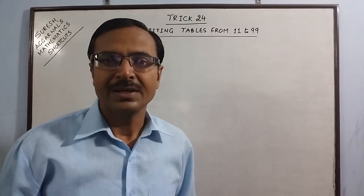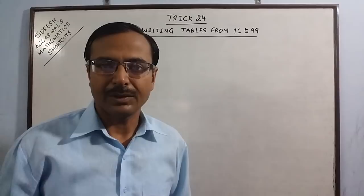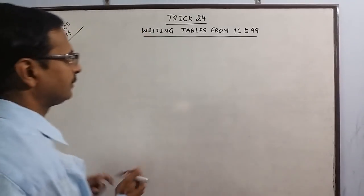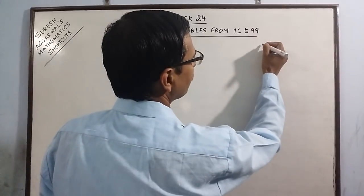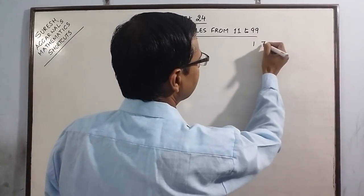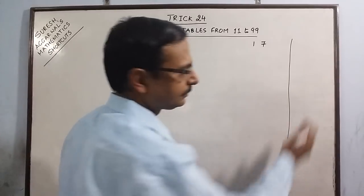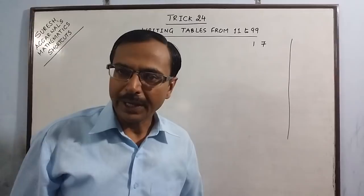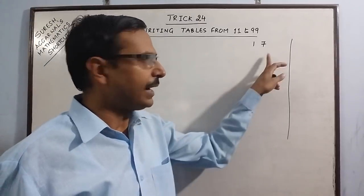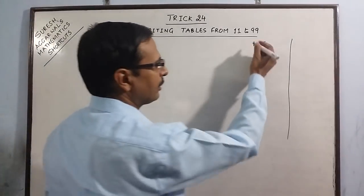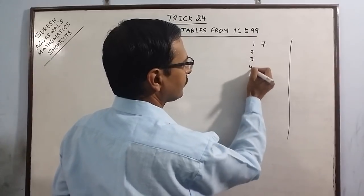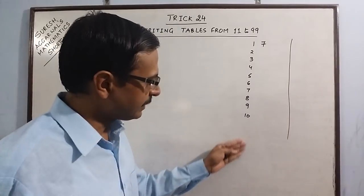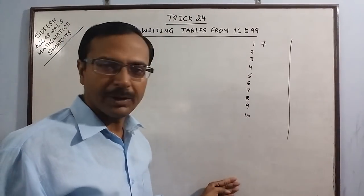I will illustrate this. I am taking a very simple lower number — say 17 first. So if you have to write the table of 17, I will write the table on this side and illustrate the method here. You just need to write the tables of 1 and 7. The table of 1 is obvious. I am writing this table up to 10, but you can extend this method to any number further.